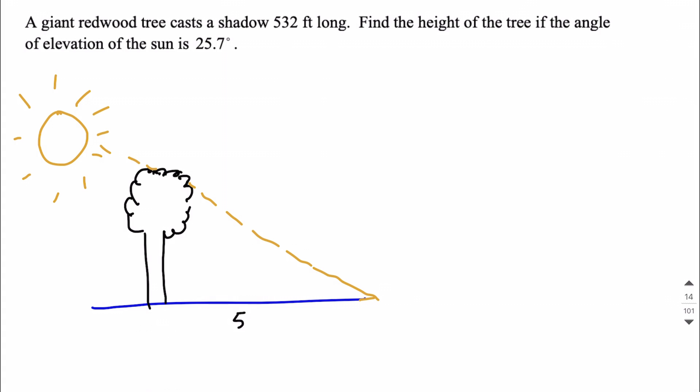So that shadow is 532 feet across the ground here from the end of our triangle right up until the tree's base.